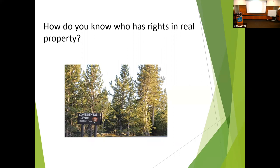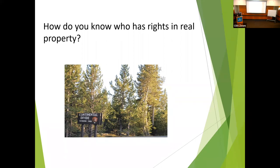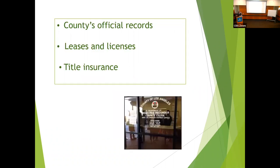You record a deed of trust, a grant deed, or a special warranty deed — a deed of trust secures a loan, while a deed actually conveys property. So when you buy a house, condo, building, hotel, or piece of land, you want to first pull title through a title company. Title insurance companies pull title from the county official records and provide that service.